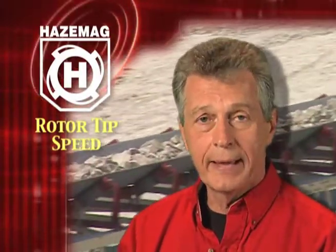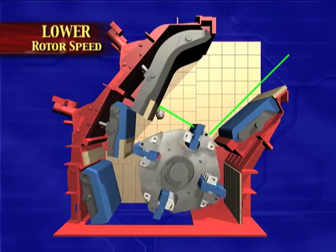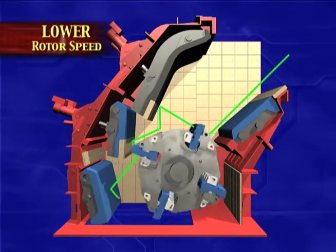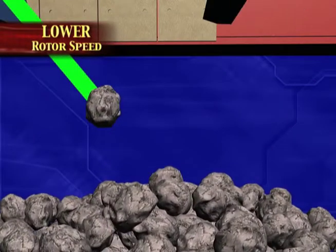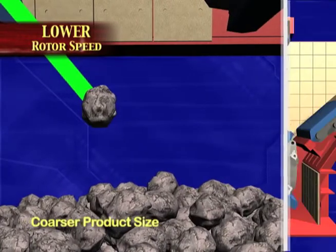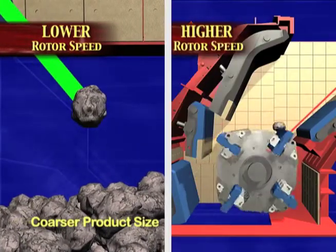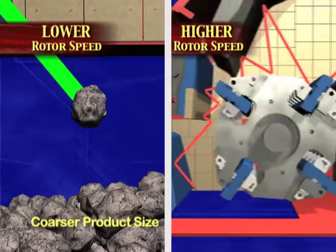The granulation of the product size is not only influenced by the gap setting, but also by the rotor tip speed. A lower rotor tip speed produces a coarser product size, while a higher rotor tip speed produces the reverse effect and results in a finer product size.